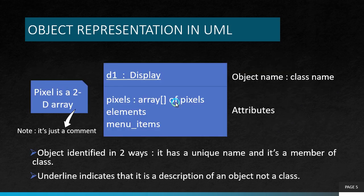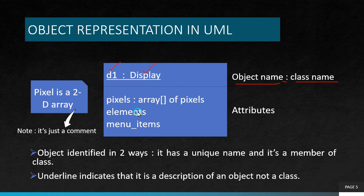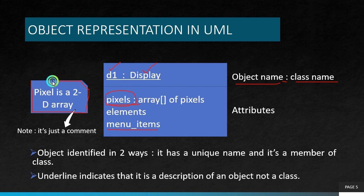In case of UML, we are presenting the object as object name, colon, and class name. So here d1 is the object name, display is the class name. Also we have the attributes: pixels, menu items. We don't know much about this attribute, so we use comments. Just like in programming languages, we can also use comments here, using a rectangular box with a right-fold shape. So here we are describing it as pixel is a two-dimensional array. It's a comment, and it is known as a note in UML.